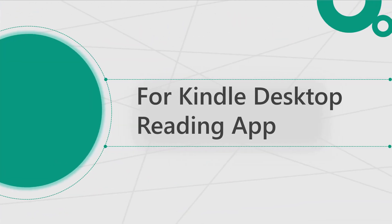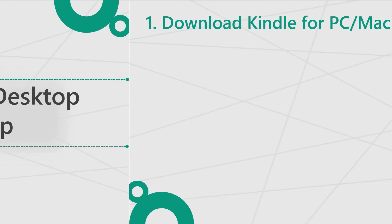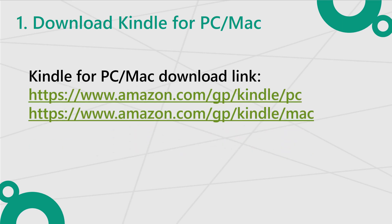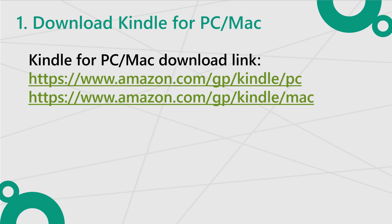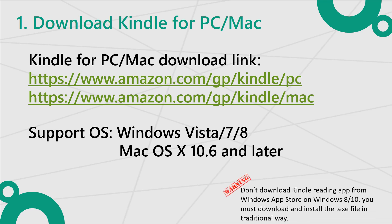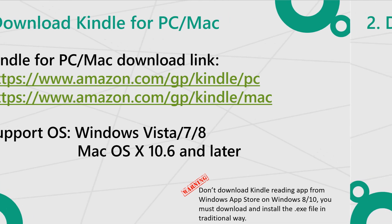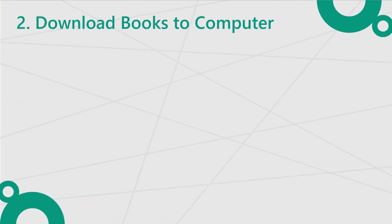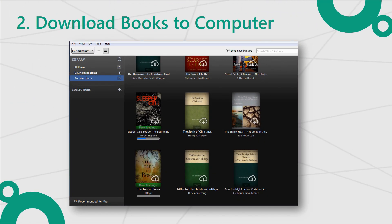If you don't have a Kindle eReader, like Kindle Paperwhite or Kindle Voyage, you should follow this method. Step 1: Download and install the Kindle desktop app. The Kindle official site provides both Windows and Mac versions. Windows 8 and Windows 10 users, please notice — don't install the Kindle reading app from the Windows App Store. You must download the traditional .exe file from Amazon.